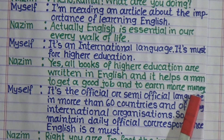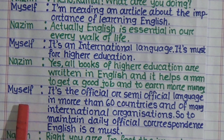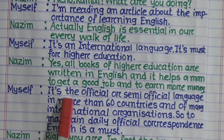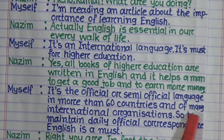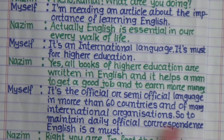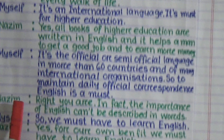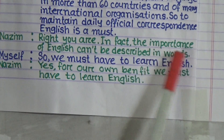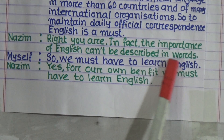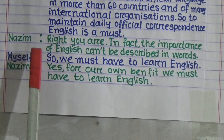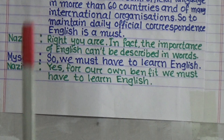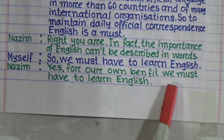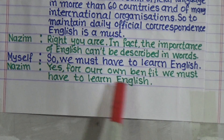In reply, myself says: 'It's the official or semi-official language in more than 60 countries and of many international organizations, so to maintain daily official correspondence, English is a must.' Myself adds: 'So we must learn English.' And Najim says: 'Yes, for our own benefit we must learn English.'